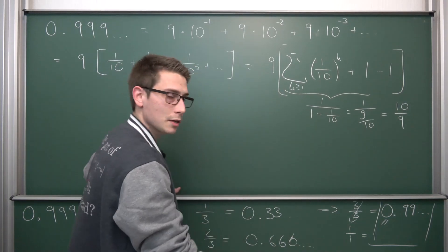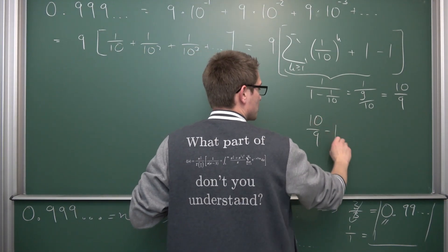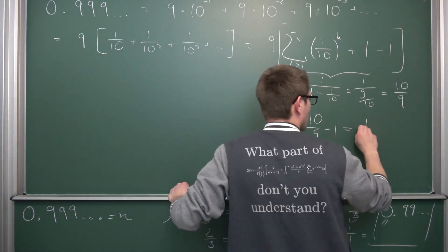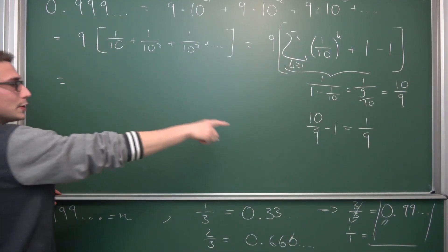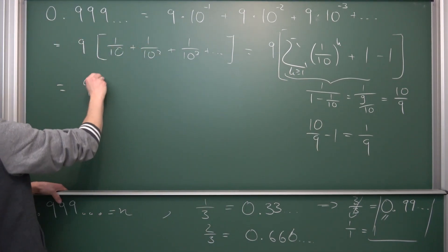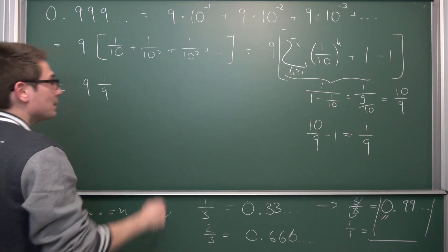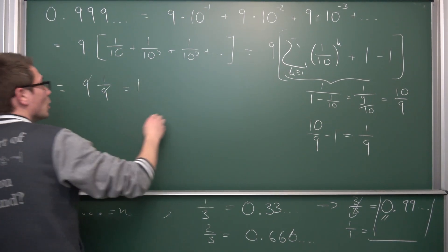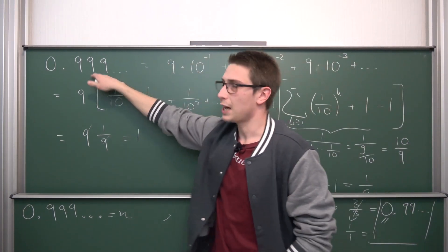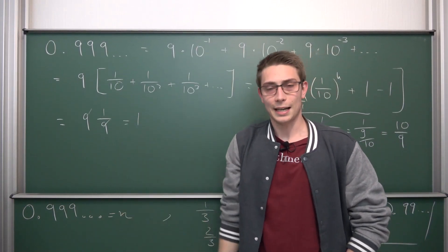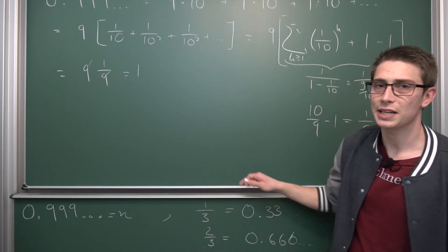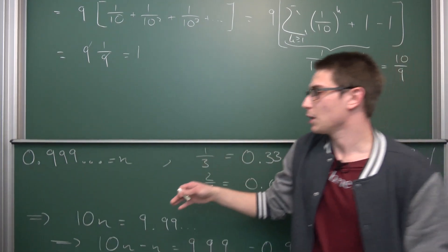1 minus 1 tenth is going to give you 10 minus 1 over 10, which is 9 over 10. So all of this is 1 over 9 over 10. And now taking the reciprocal of this is going to give you 10 over 9. And now if we were to subtract the 1 from it, so 10 over 9 minus 1, we can expand this by 9 over 9, giving us 10 minus 9 over 9, which is 1 ninth. So meaning overall this geometric series is going to turn into 9 times, and all of this what we have in big brackets is going to turn into 1 ninth. And I mean this is what we got before: 9 and 9 are going to cancel out, giving us 1 in the process.